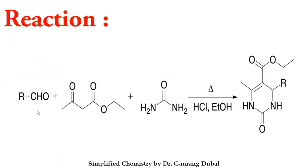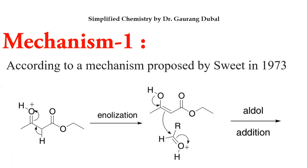The reaction is very simple. Aldehyde, active methylene compound ethyl acetoacetate, and urea condense in an alcoholic medium with acid. That leads to the formation of 3,4-dihydropyrimidinone, also written as 1,2,3,4-tetrahydropyrimidinone, and that product was developed by Biginelli.